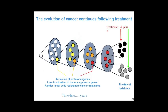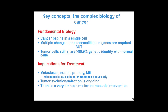The key messages I'd like to leave with you: this is a disease that begins in one cell that acquires multiple genetic mutations. Not all of them are important — some are bystander effects — but if you acquire the critical genetic changes, the cancer cell moves from the white cell to the yellow to the orange. Despite these changes, the cancer cell and the normal cell are really very, very similar and very hard to tell apart, so crude treatments often get the two muddled up. It's the metastases, not the primaries, that kill. Tumor evolution and selection is ongoing, and there is very, very limited time for therapeutic intervention.